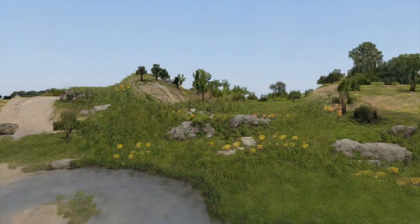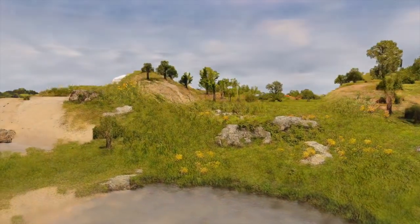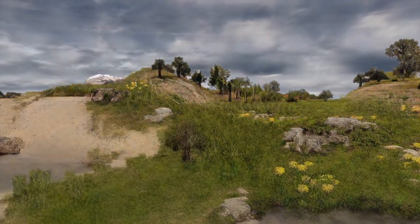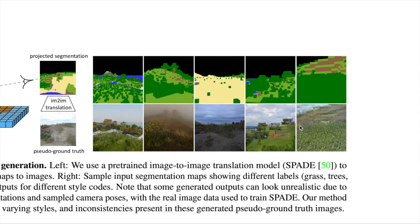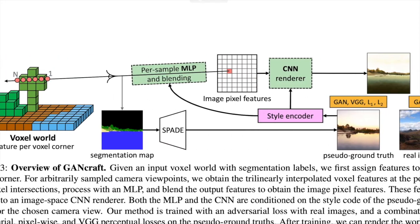AI can even control the style of the new world it generated. So how does AI achieve this? It first leverages GAN technique to generate paired images between landscape layout and realistic photos, then applies NERF to produce the final world.